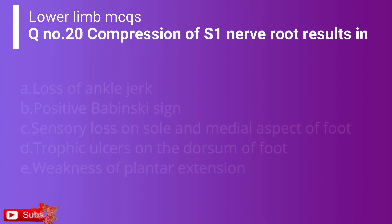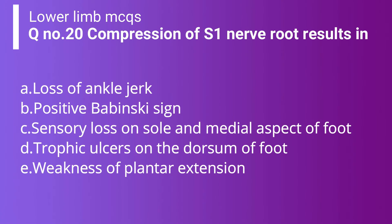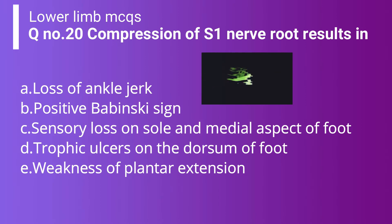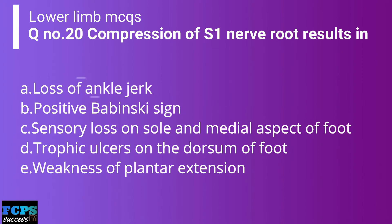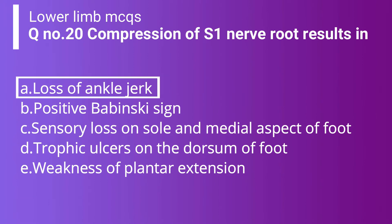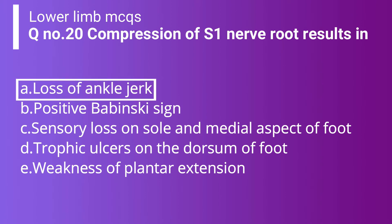Question 20: Compression of the S1 nerve root results in: Option A: Loss of ankle jerk. Option B: Positive Babinski sign. Option C: Sensory loss on the sole and medial aspect of foot. Option D: Trophic ulcers on the dorsum of the foot. Option E: Weakness of plantar flexion. The correct answer is Option A — loss of ankle jerk — which is the sign when there is compression of the S1 nerve root.